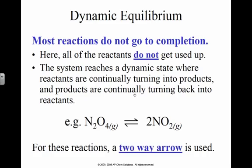However, most reactions do not go to completion. All the reactions do not get used up, so therefore this reaction goes in both directions. The reactants are producing products; the products are also producing reactants, so we use the two-way arrow.